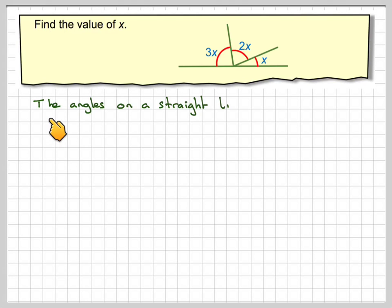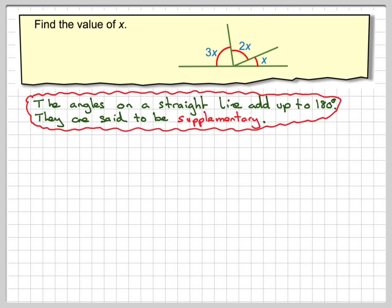So, the main fact here is that the angles on a straight line add up to 180. They are said to be, and there's a special name for that, supplementary. So, angles that add up to 180 are said to be supplementary.